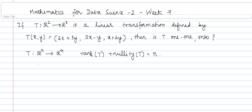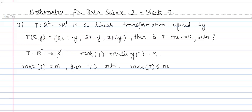There are two other things that we also know. If rank of T is equal to m, then T is onto. We also know that rank of T is less than or equal to m, because the range of T is a subspace of the codomain Rm, so the rank of T can be at most m. And if nullity of T is 0, we know that the linear transformation is 1-to-1.